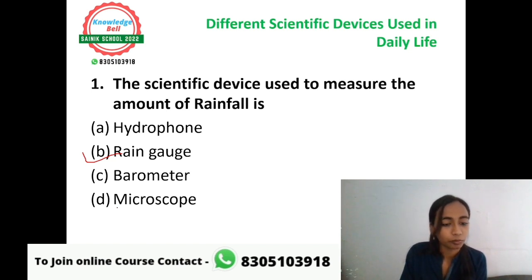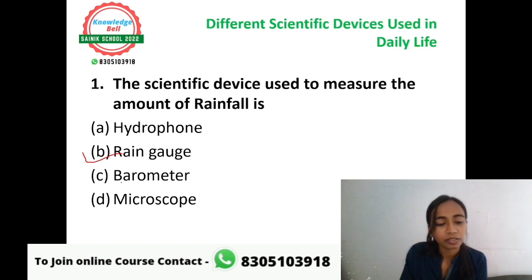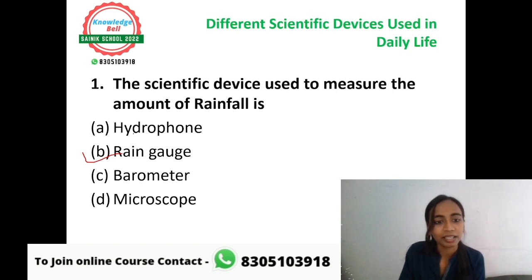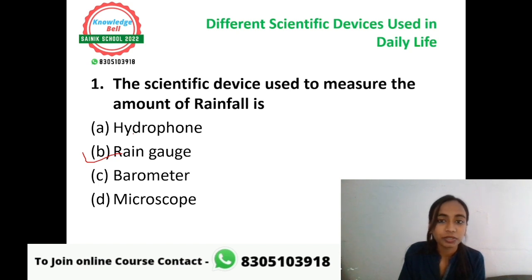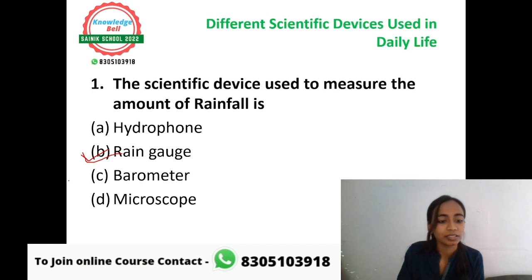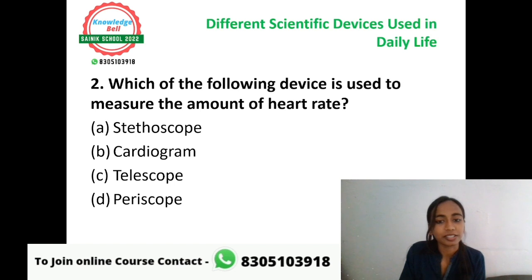Why not the others? Microscope is used to magnify and observe small microorganisms. Barometer is used to measure atmospheric pressure. Hydrophone is a scientific device used to detect sounds underwater. So only option B, rain gauge, is the correct answer — the device used to measure the amount of rainfall.